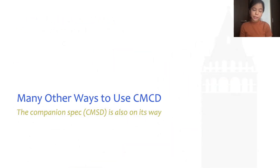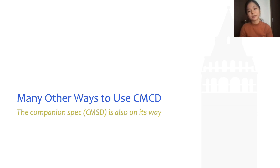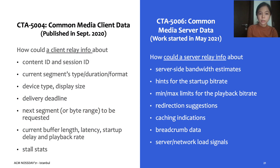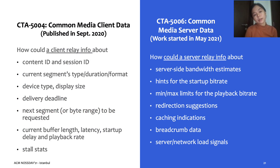Our work in this paper is one of the early proof-of-concepts of using CMCD in streaming applications. We reported our initial findings and shared our work in hopes of spurring further interest and effort in this area. There are indeed many other ways to use CMCD, and we look forward to seeing more applications and results in the near future. On this note, there is also another interesting development where CTA is working on its companion spec — the CMSD specification, which stands for Common Media Server Data. Comparing both specifications, the underlying motivation is similar, in that we wish to promote client-server information sharing.